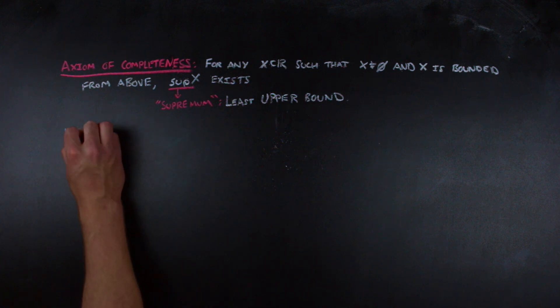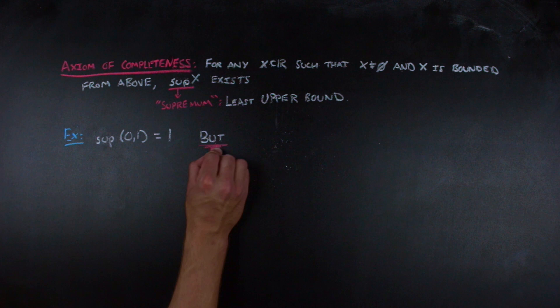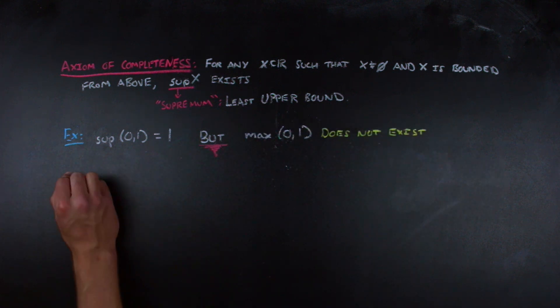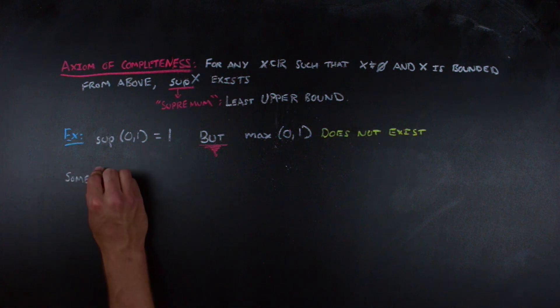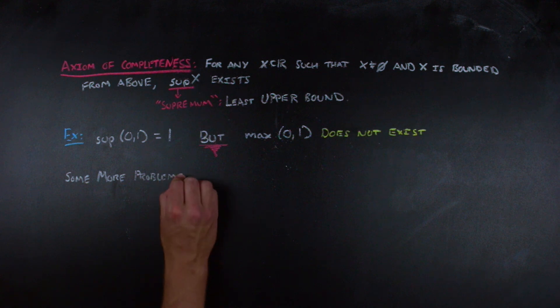That least upper bound is what we define as the supremum of a set. So for example, the supremum of the open set from 0 to 1 is 1, but there is no maximum here. That's the main difference between supremums and maximums. Maximums have to be in the set, while supremums do not.